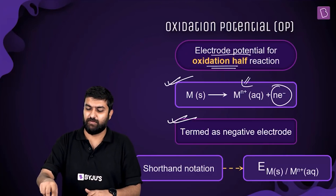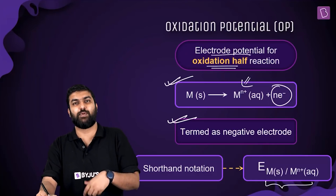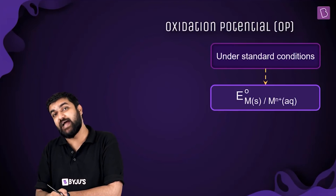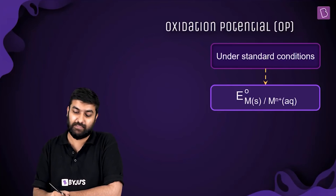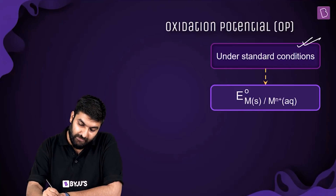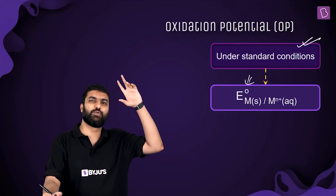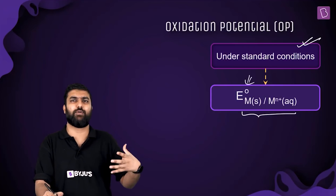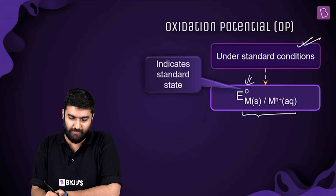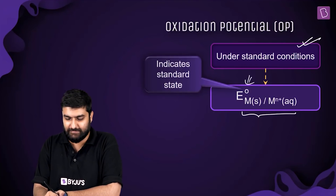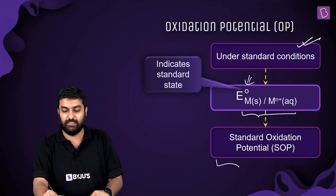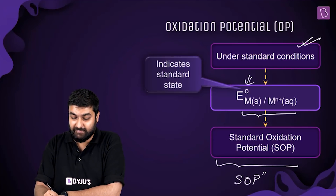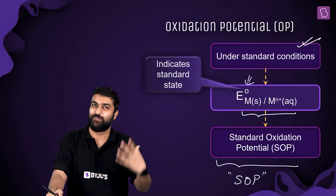We also don't write the electrons — we're smart enough to figure out that M is going from zero to n+, so n electrons would have been released. Under standard conditions, we add a superscript 'not' symbol. At the bottom we write M solid slash M n+ aqueous. We call this the Standard Oxidation Potential — remember SOP, we will say it again and again.